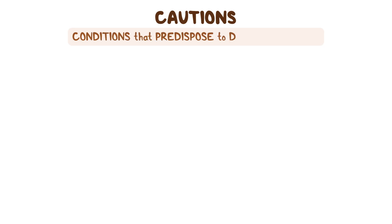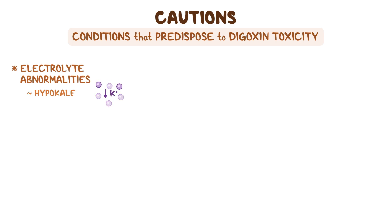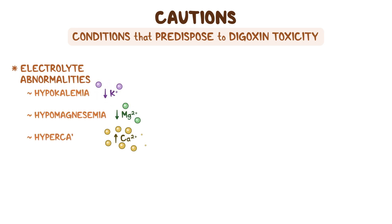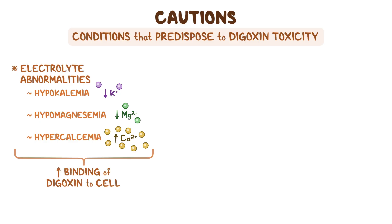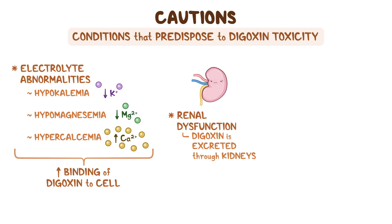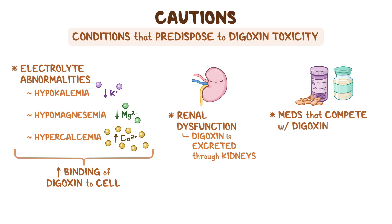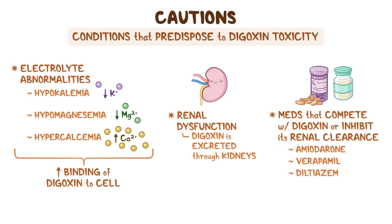Digoxin should be used with caution in certain conditions that may predispose to digoxin toxicity. These include electrolyte abnormalities like hypokalemia, hypomagnesemia, and hypercalcemia, all of which increase the binding of digoxin to the cell, as well as renal dysfunction, since digoxin is excreted through the kidneys. The risk of toxicity is also increased by medications that compete with digoxin for the binding site or inhibit its renal clearance, such as amiodarone, verapamil, diltiazem, and quinidine.